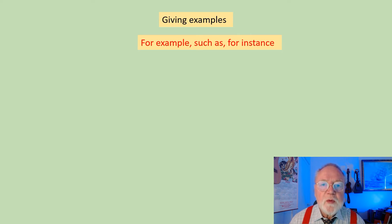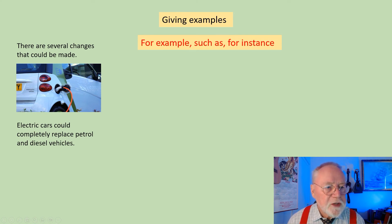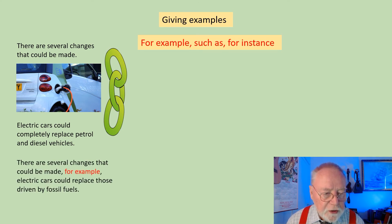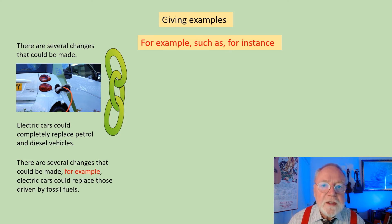And finally, for giving examples, we can use 'for example,' 'such as,' and 'for instance.' These are fairly interchangeable. Looking at these two sentences: 'There are several changes that could be made' and 'Electric cars could completely replace petrol and diesel engines.' Joined together: 'There are several changes that could be made. For example, electric cars could replace those driven by fossil fuels.' But I could have also said 'changes that could be made, such as...' or 'changes that could be made, for instance.' They're nicely interchangeable.